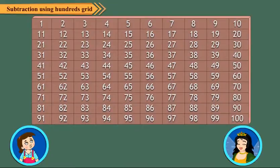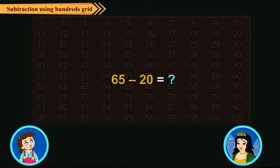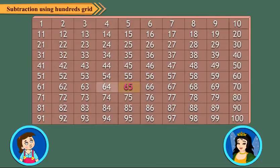Similarly, to find 65 minus 20, we move 20 steps upward from 65 to reach 45.